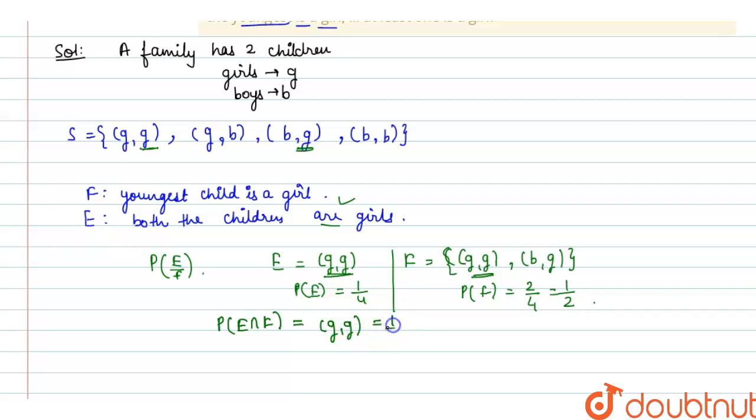So it is probability of E intersection F upon probability of F. So 1 upon 4 divided by 1 upon 2, or 1 upon 4 times 2 upon 1, which means the answer is 1 upon 2.